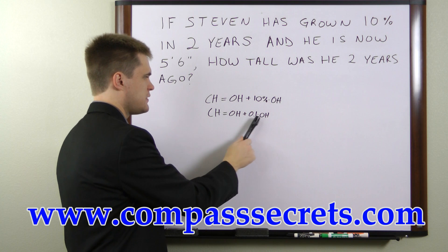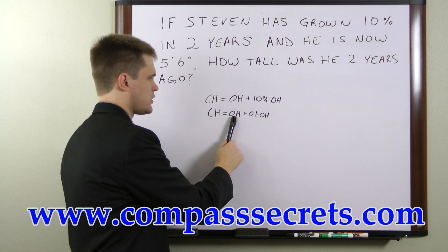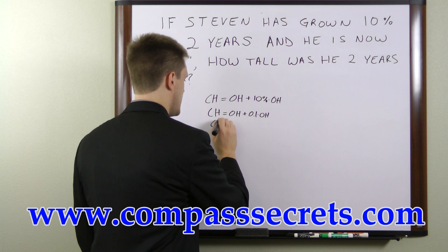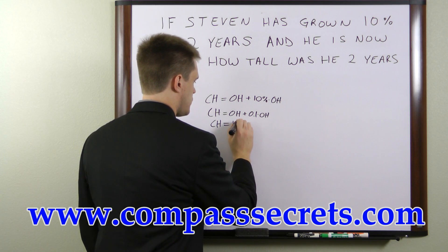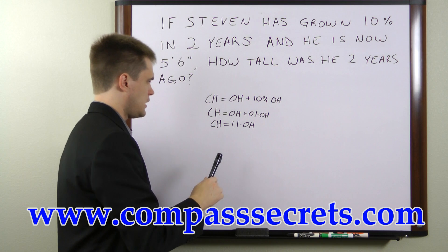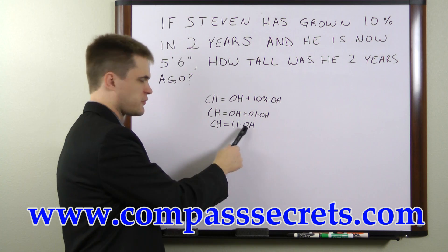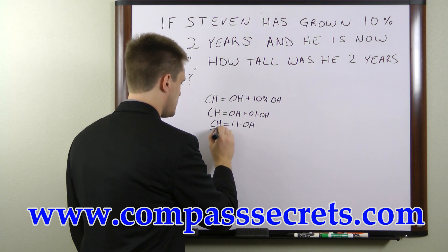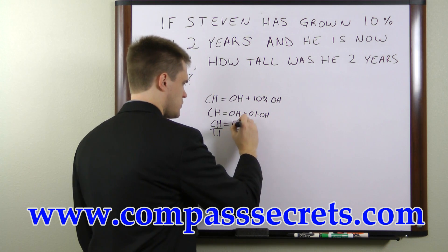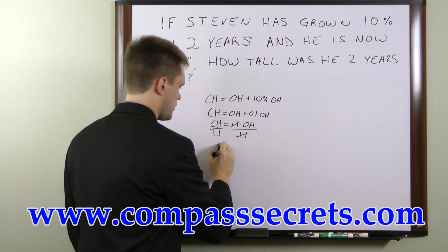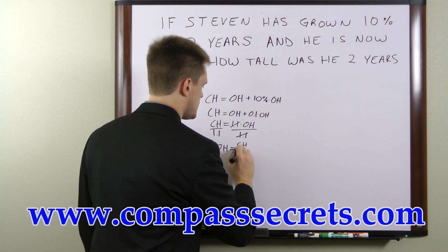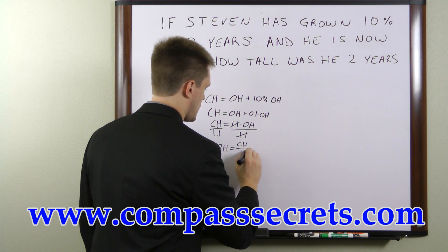Now we can add these two together. This is 1 OH and this is 0.1 OH, so we can rewrite this as 1.1 OH. To solve for OH, all we have to do is divide both sides of the equation by 1.1. The 1.1 will cancel and what we are left with is: the original height is equal to the current height divided by 1.1.